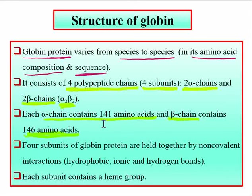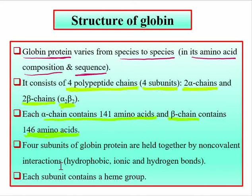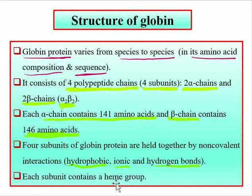This is the main point of difference between the globin of hemoglobin and myoglobin. The globin protein in hemoglobin has four subunits, while in myoglobin the globin had only a single chain with 153 amino acid residues. These four subunits are held together by non-covalent interactions — hydrophobic interactions, ionic interactions, and hydrogen bonds. Each subunit contains one heme group.